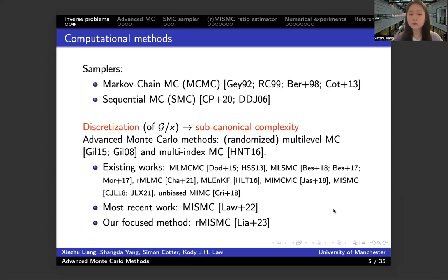So that will bring an extra discretization bias term when you compute the complexity of the Monte Carlo method. People have developed some advanced Monte Carlo methods — like the multi-level and multi-index Monte Carlo methods — to alleviate this kind of compounded complexity.